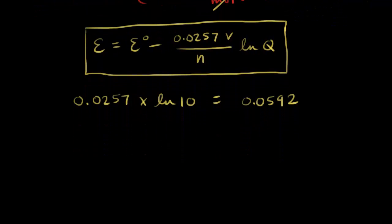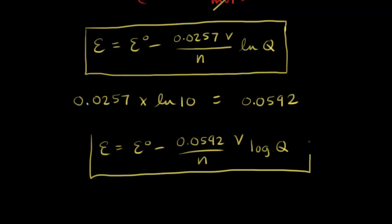We can write the Nernst equation once again. So the cell potential E is equal to the standard cell potential E0 minus 0.0592 over N. We essentially just change this from natural logarithm to base 10 logarithm. So this would be log of Q, log of the reaction quotient. So here is just another form of the Nernst equation.